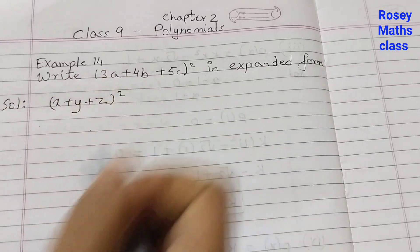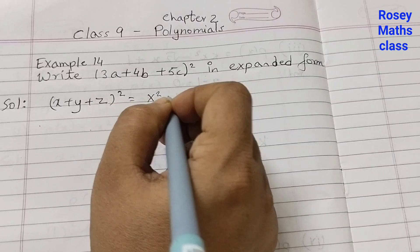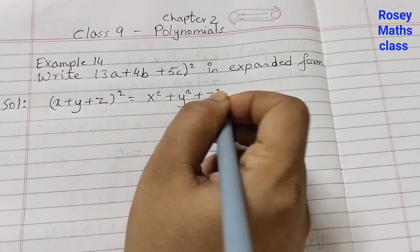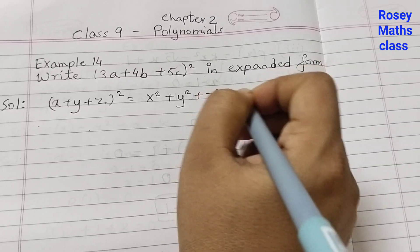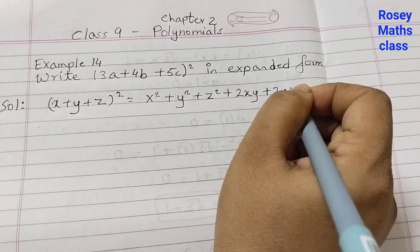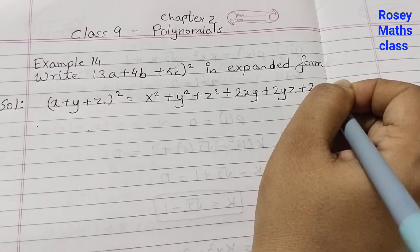The identity is: (x + y + z)² = x² + y² + z² + 2xy + 2yz + 2zx.